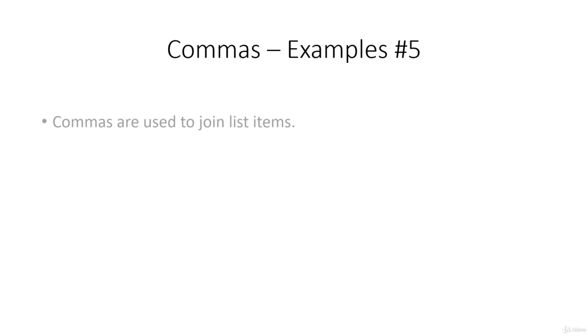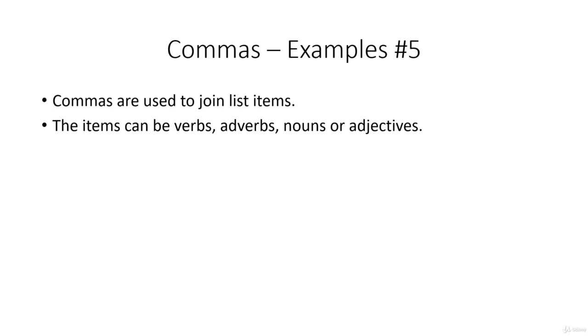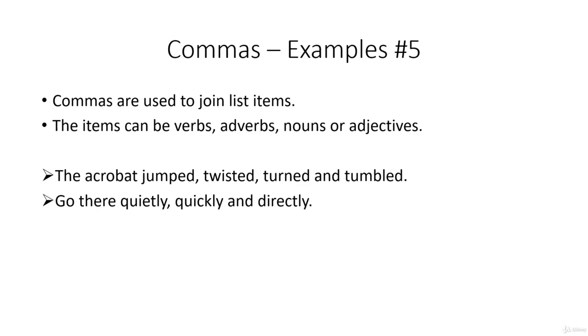We can join lists of items. And the items can be verbs, adverbs, nouns, or adjectives. And we'll look at an example of each. So for verbs, the acrobat jumped, twisted, turned, and tumbled. And commas between the individual items.